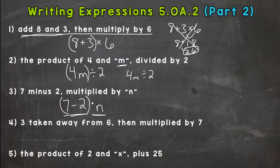Number four, 3 taken away from 6, then multiplied by 7. Remember, you are taking the 3 away from 6. Order matters here. So if you had $6 and someone takes 3, it would look like this: 6 minus 3. And we need to do that first, so put it in parentheses, then multiply by 7.